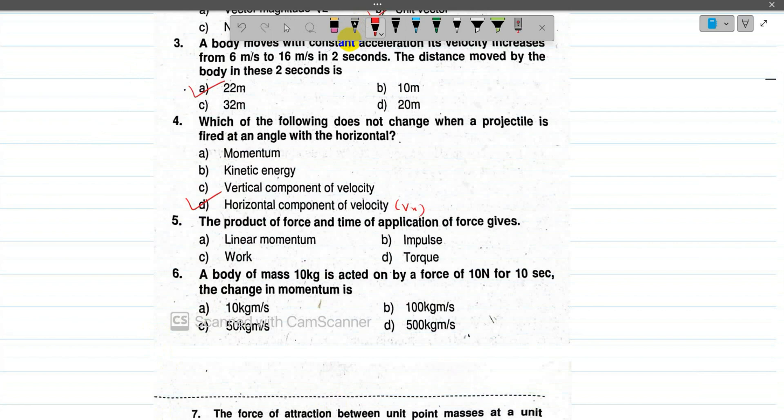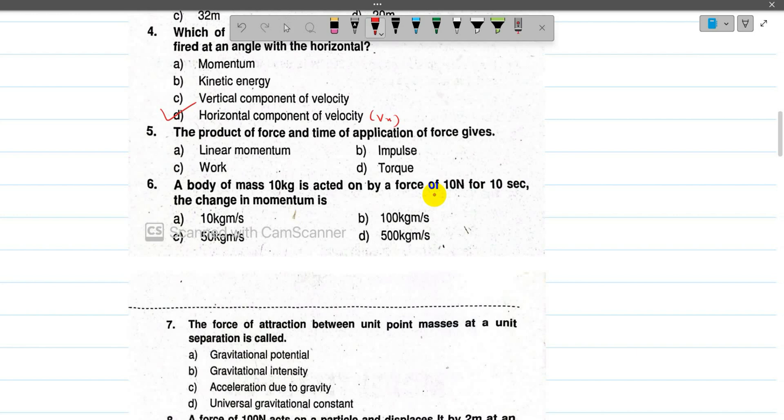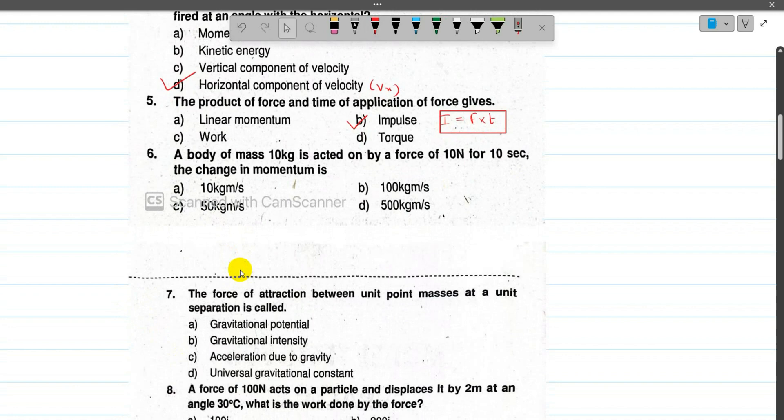Number 5: the product of force and time of application of force gives impulse. So impulse means force times time, the answer is option number B.